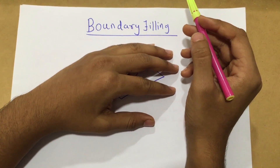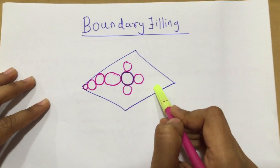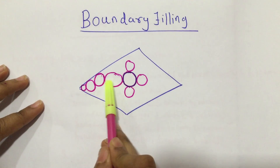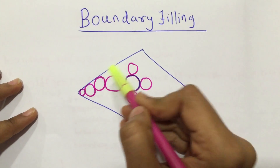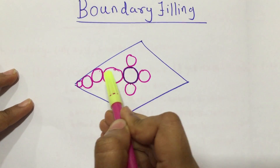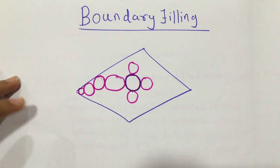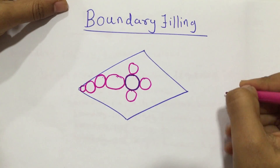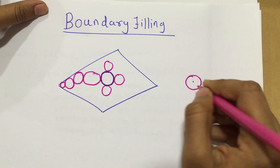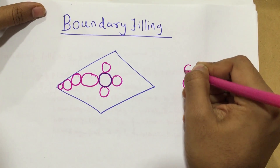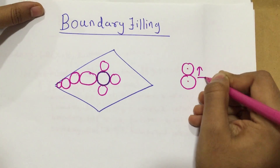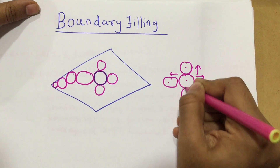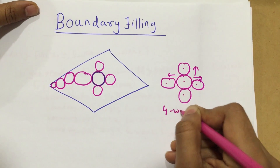So what is boundary filling? In this method, the edges of the polygon are first drawn. Then, starting with some seed — any point inside the polygon — we examine the neighboring pixels to check whether the boundary pixel is reached. We highlight each of the pixels until we reach the boundary pixel. If the boundary pixels are not reached, pixels are highlighted and the process continues. From any given pixel, I have four options: I can go up, right, left, or down. This way, I get a four-way connected region.